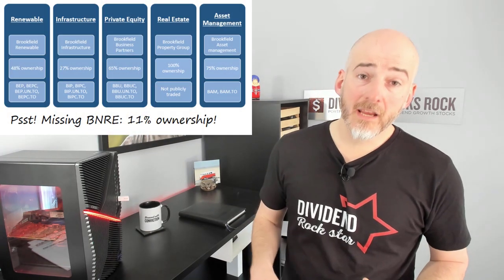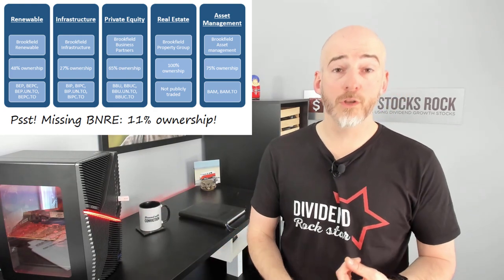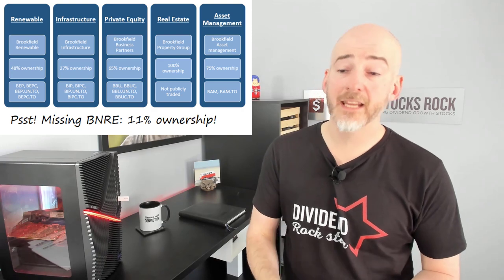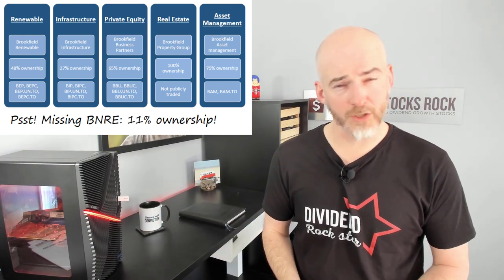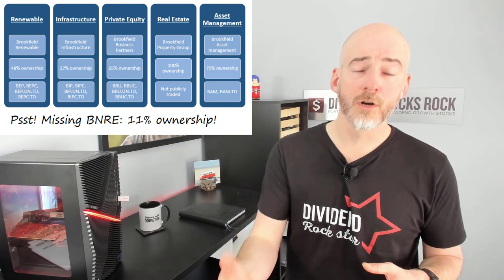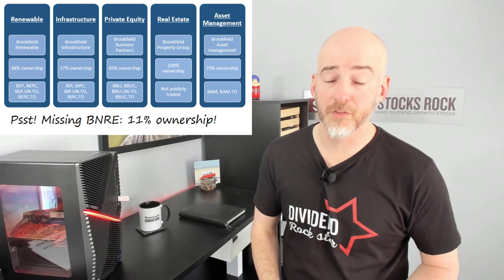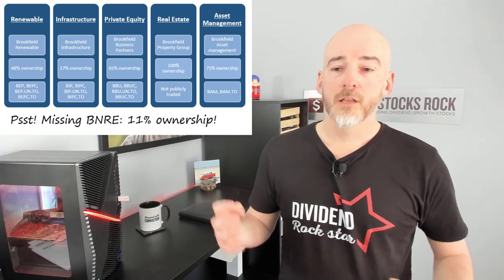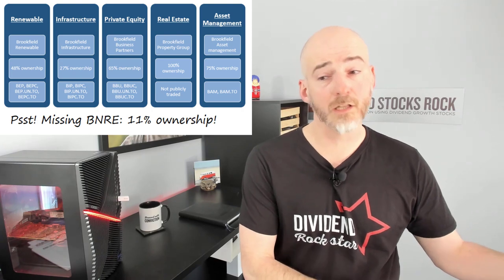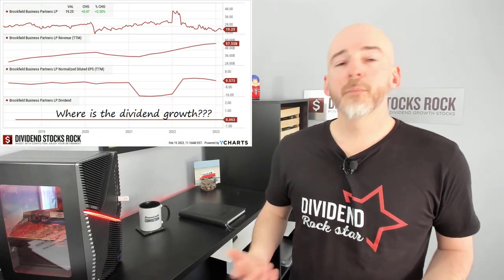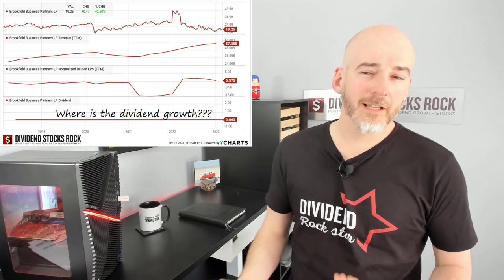When you look inside the business, you'll see that Brookfield Corporation has major stakes in various businesses: renewable, infrastructure, private equity, real estate, asset management — that is BAM — and also the Brookfield reinsurance business, which is only owned by Brookfield Corporation at 11%. We're going to do a video on Brookfield Renewable and Brookfield Infrastructure because they are amazing businesses by themselves. As for private equity, I'm not too interested in that part to be honest — it's not a dividend grower.